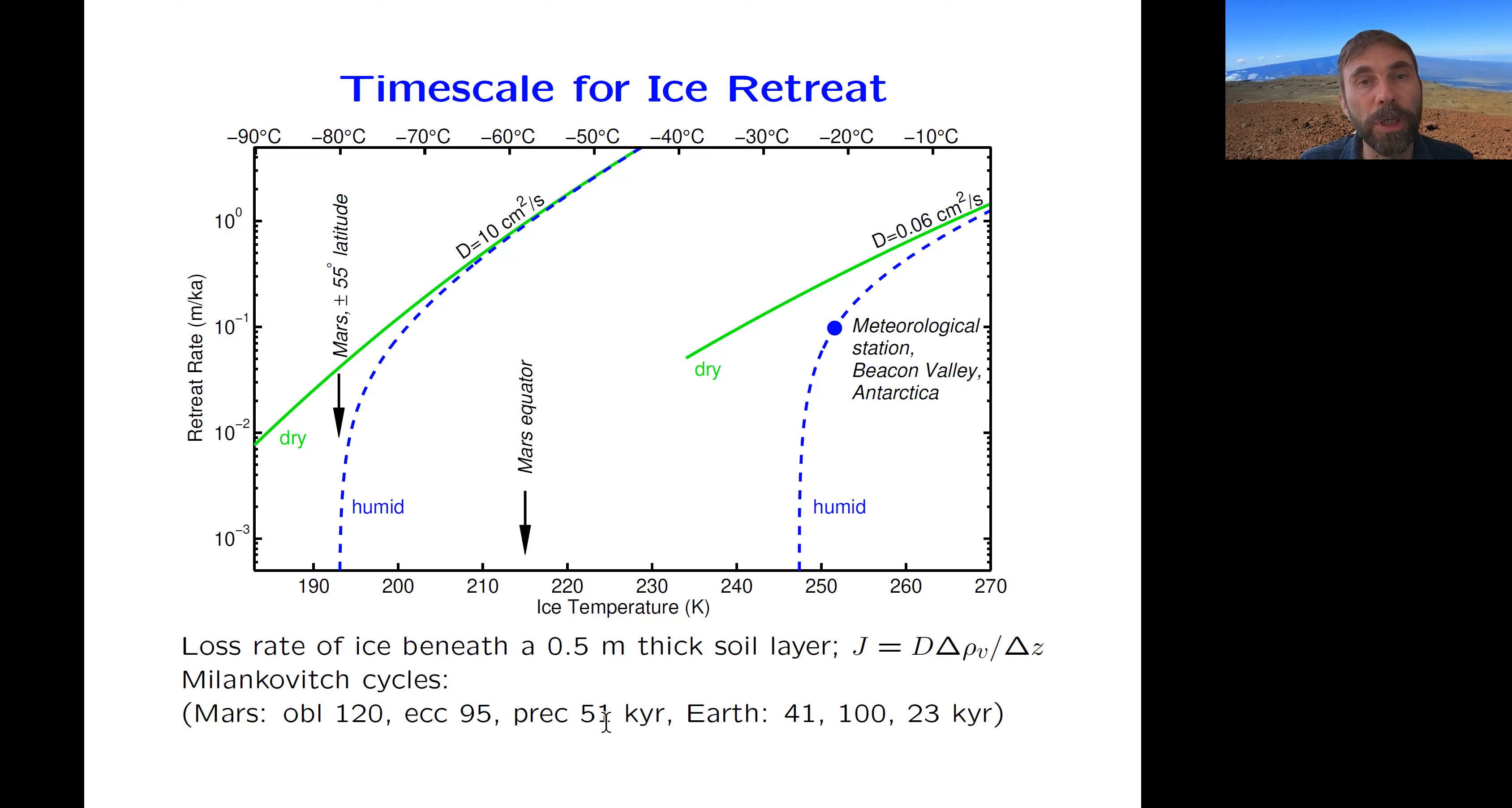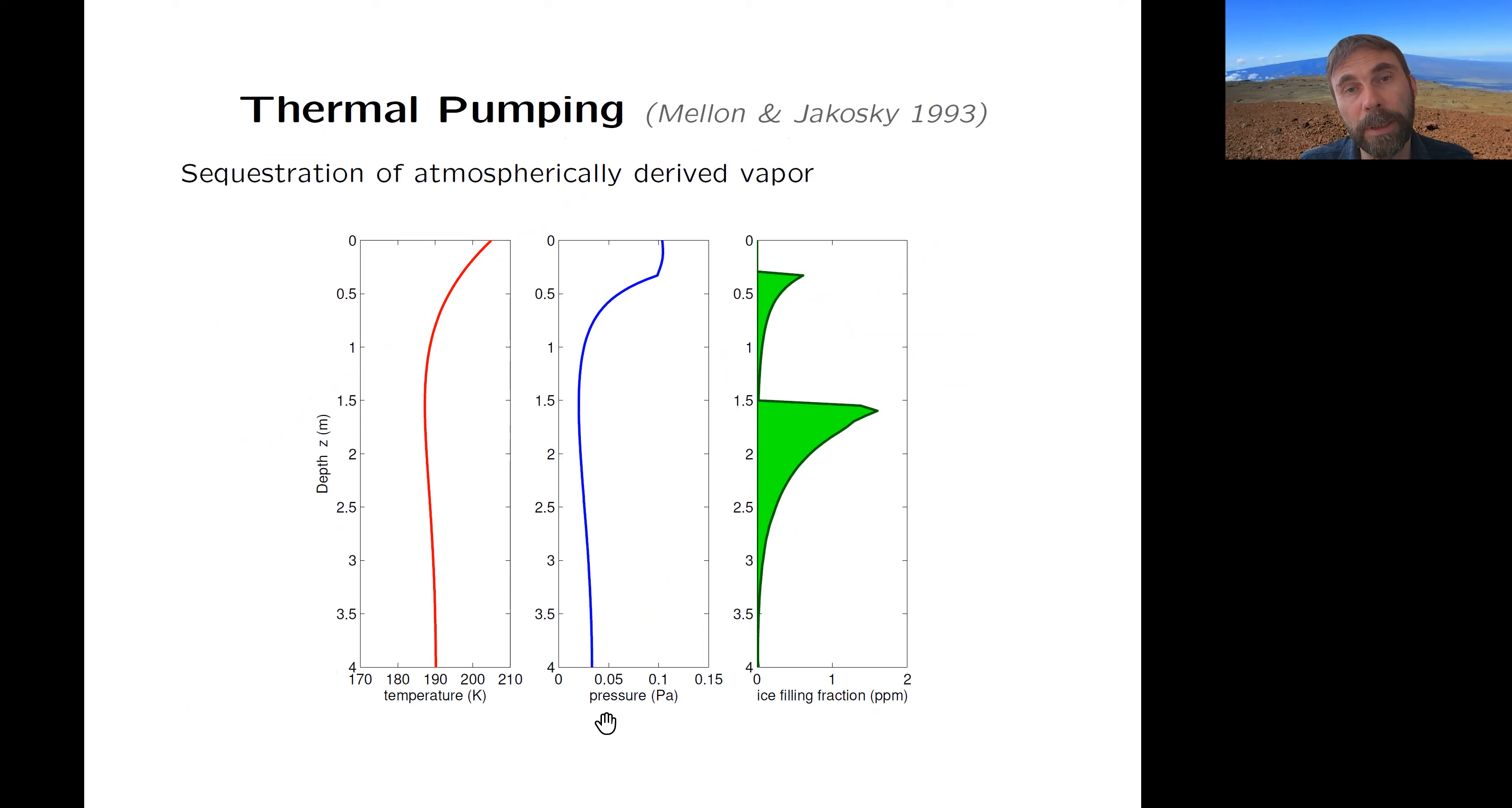And so we're talking about rates on Mars of a centimeter per thousand years. So this is fast enough to follow the Milankovitch cycles. The Milankovitch cycles of Mars are listed below: 120,000, 95,000, and 51,000 years. So there will be, there can be substantial volume changes of ice over these time periods. And therefore it had time to reach equilibrium of the present day atmosphere.